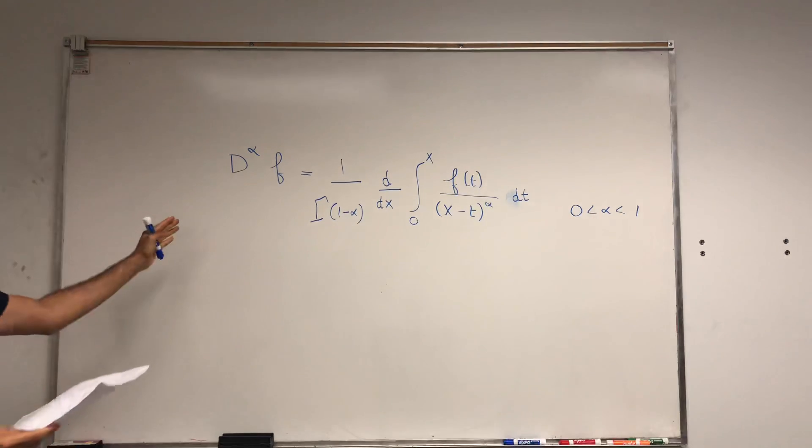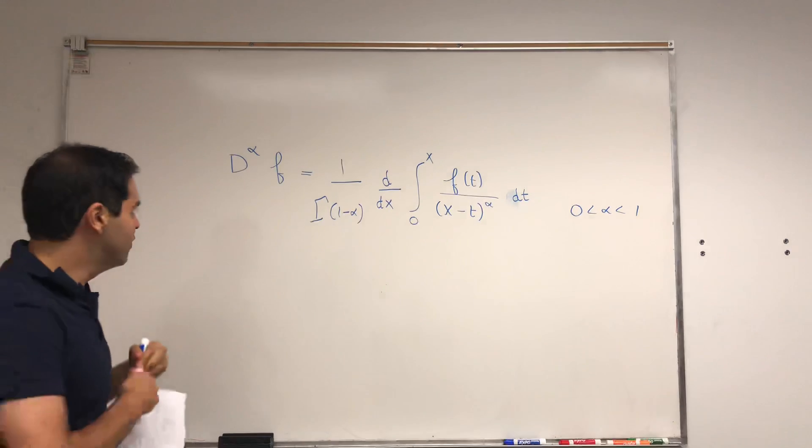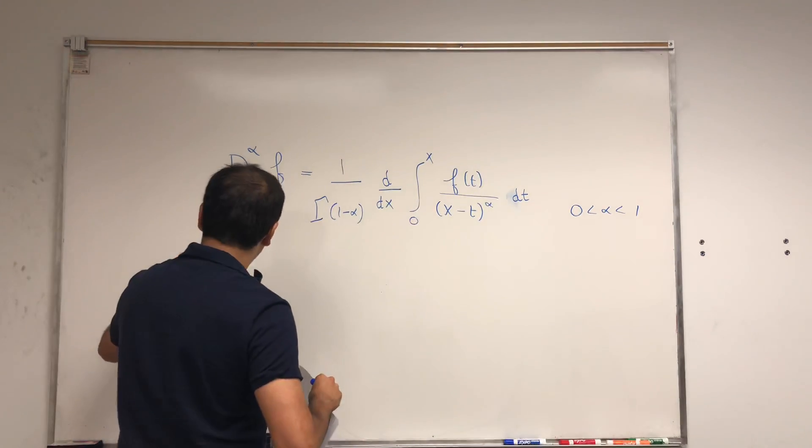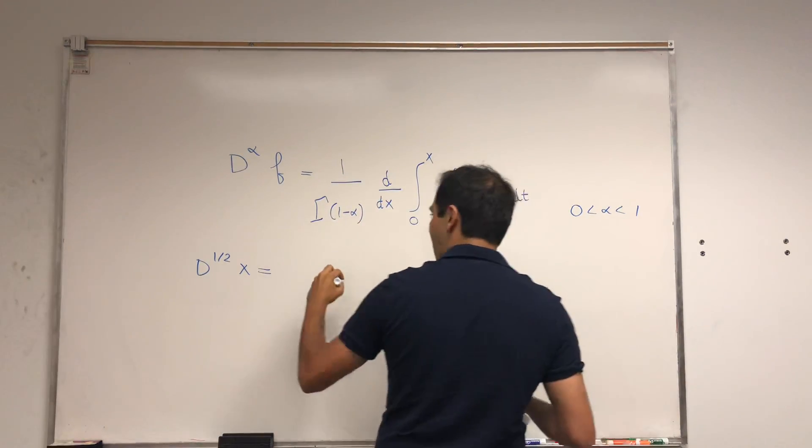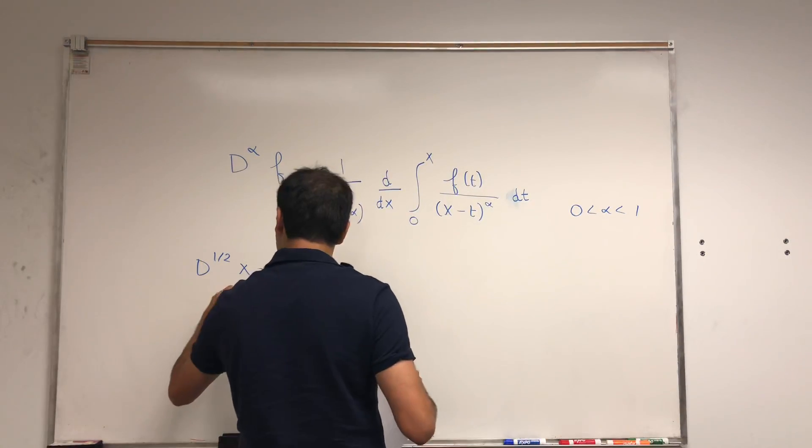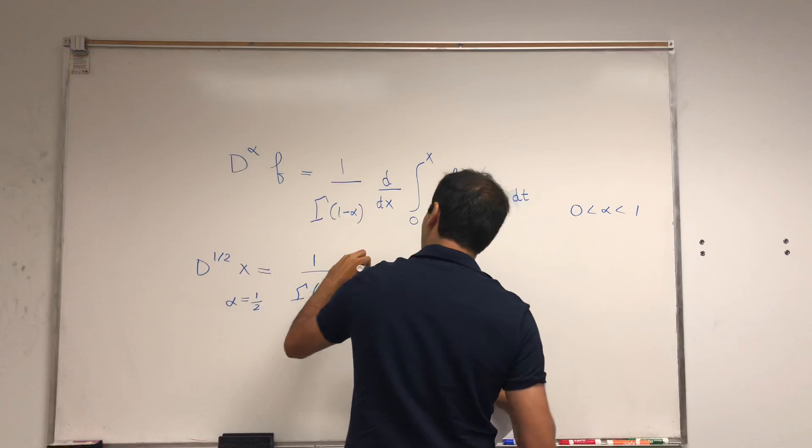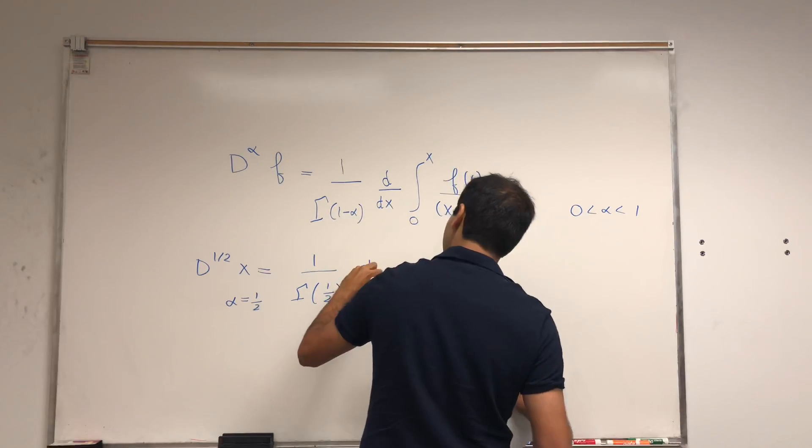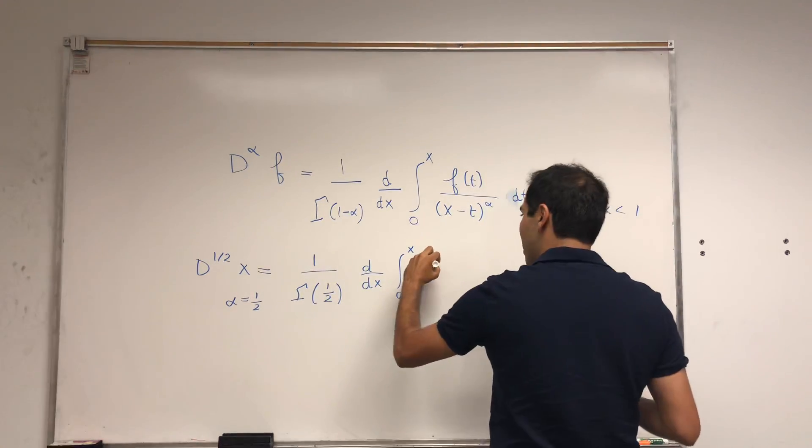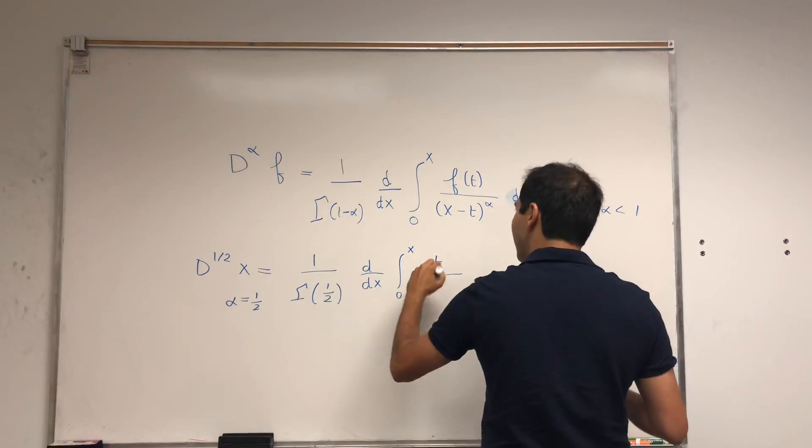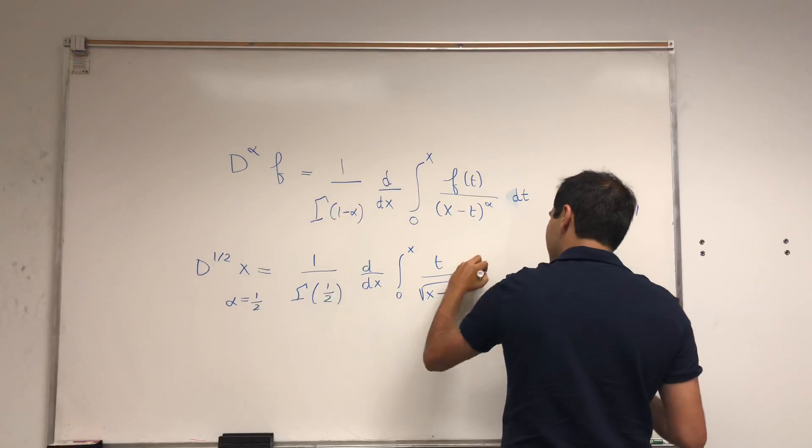Okay, wonderful. And so in particular, I want to use this to check that we indeed get the same formula for the half derivative of x. So the half derivative of x, if you plug this in, so if alpha is one half, then you get one over gamma of one half of d over dx integral from zero to x of f, which becomes x, so f of t is t, divided by x minus t to the one half, so square root of x minus t, dt.